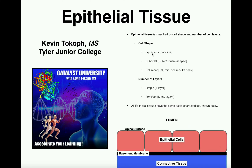For cell shape, there are really three kinds. First, there are squamous cells, which basically have the shape of a pancake — roughly circular or oval and flat. The second shape is cuboidal. Cuboidal cells are going to be cubic, but when we look at them in two dimensions, they're going to appear more square-shaped. The third type is columnar — column-like cells that are taller than they are wide, so tall and thin.